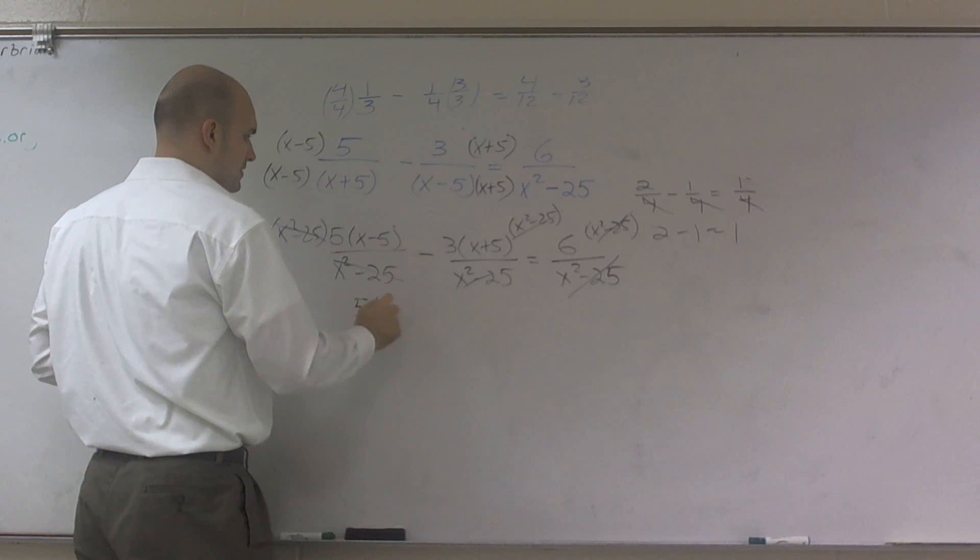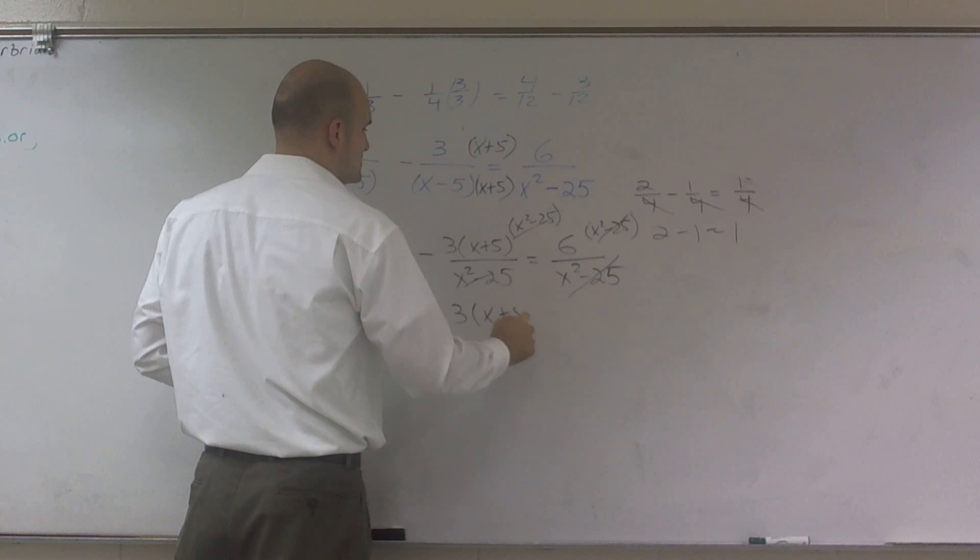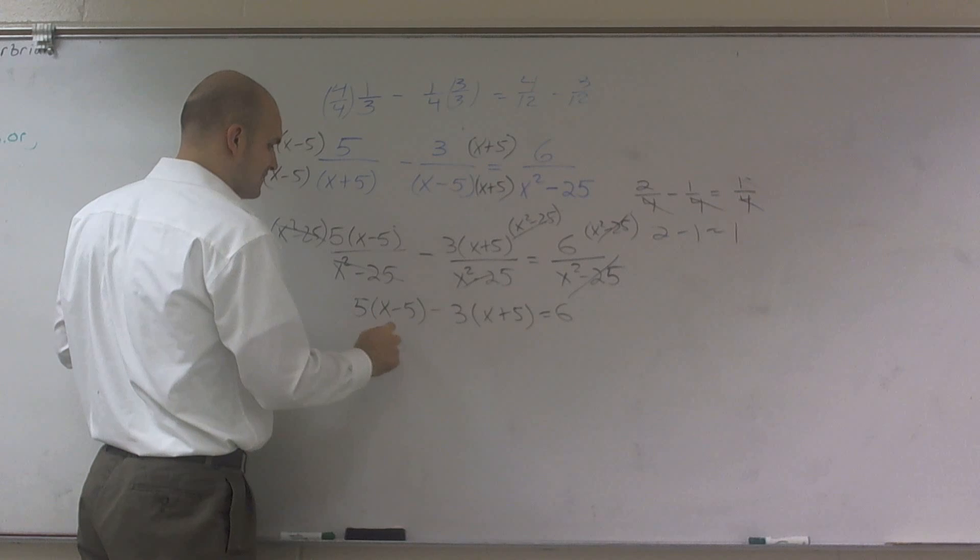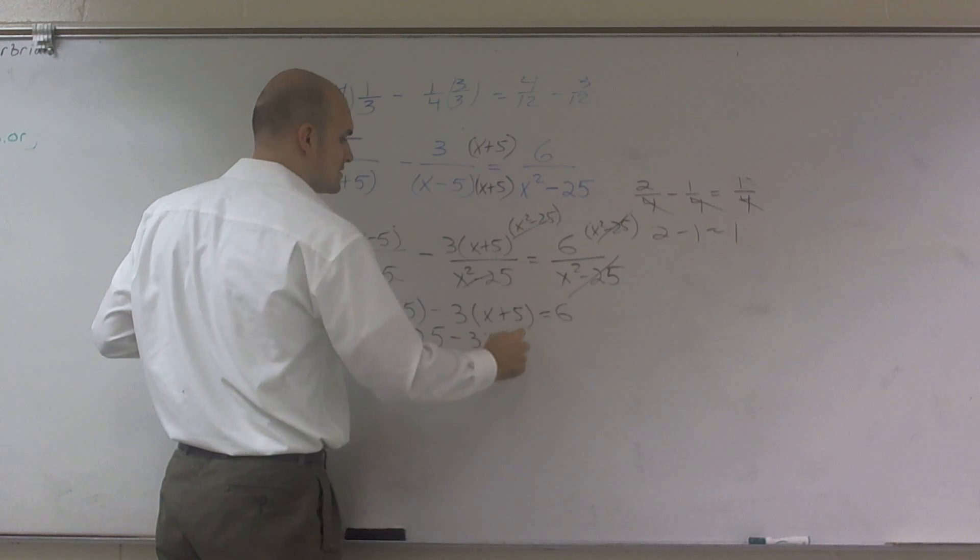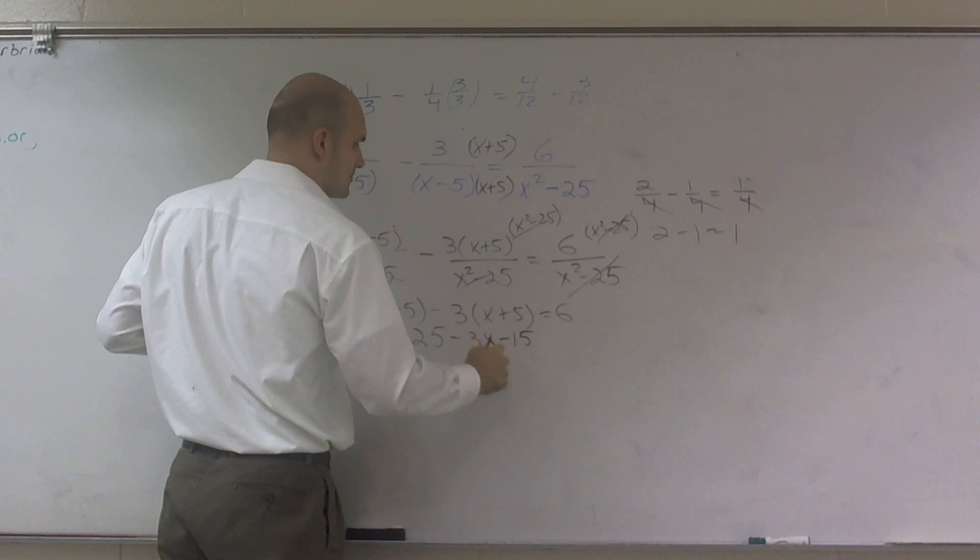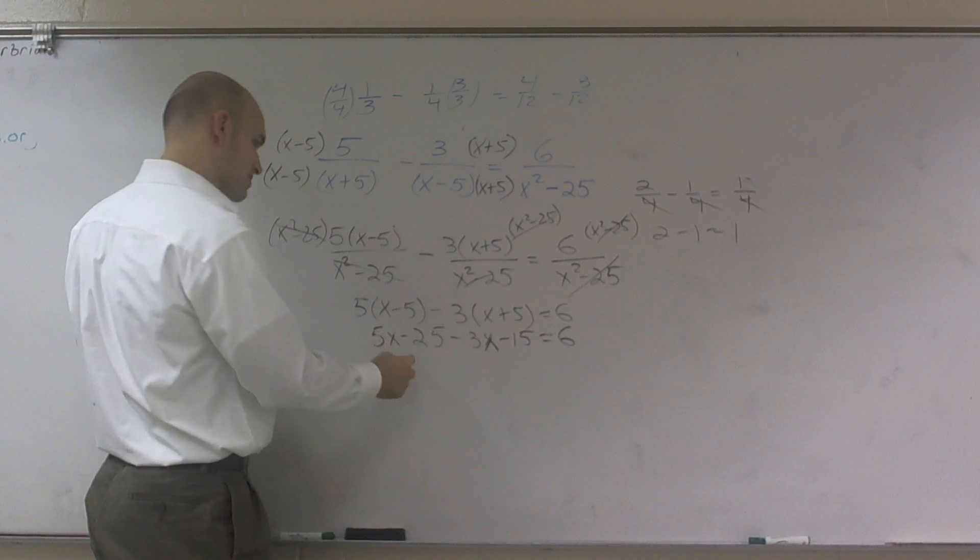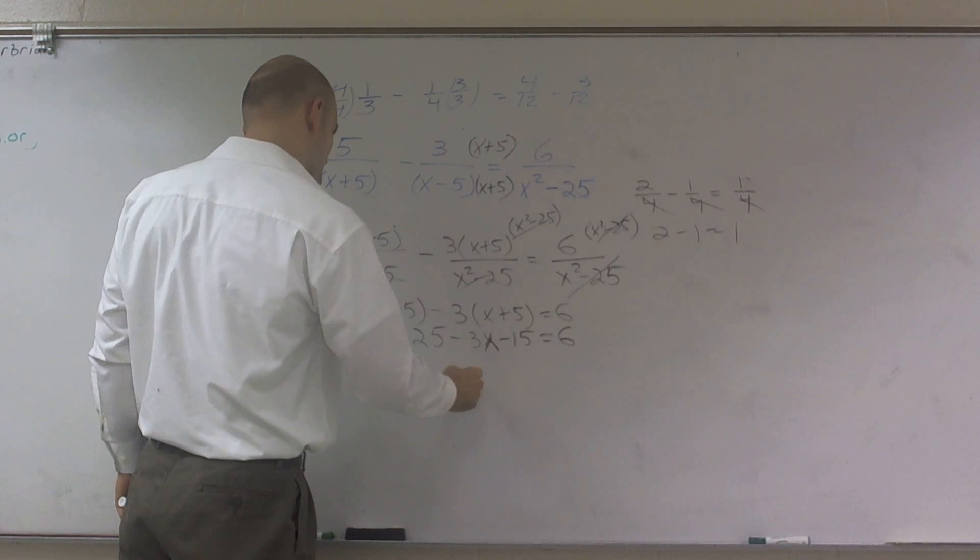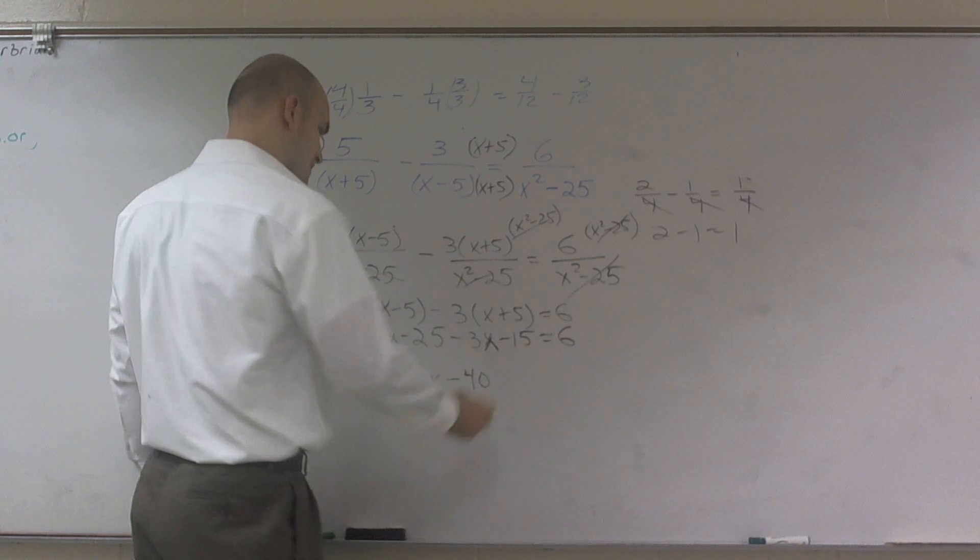So therefore, I'm left with 5 times x minus 5 minus 3 times x plus 5 equals 6. Now, what I can do is use distributed property to give me 5x minus 25 minus 3x minus 15 equals 6. I combine my like terms, so I get 2x minus 40 equals 6.